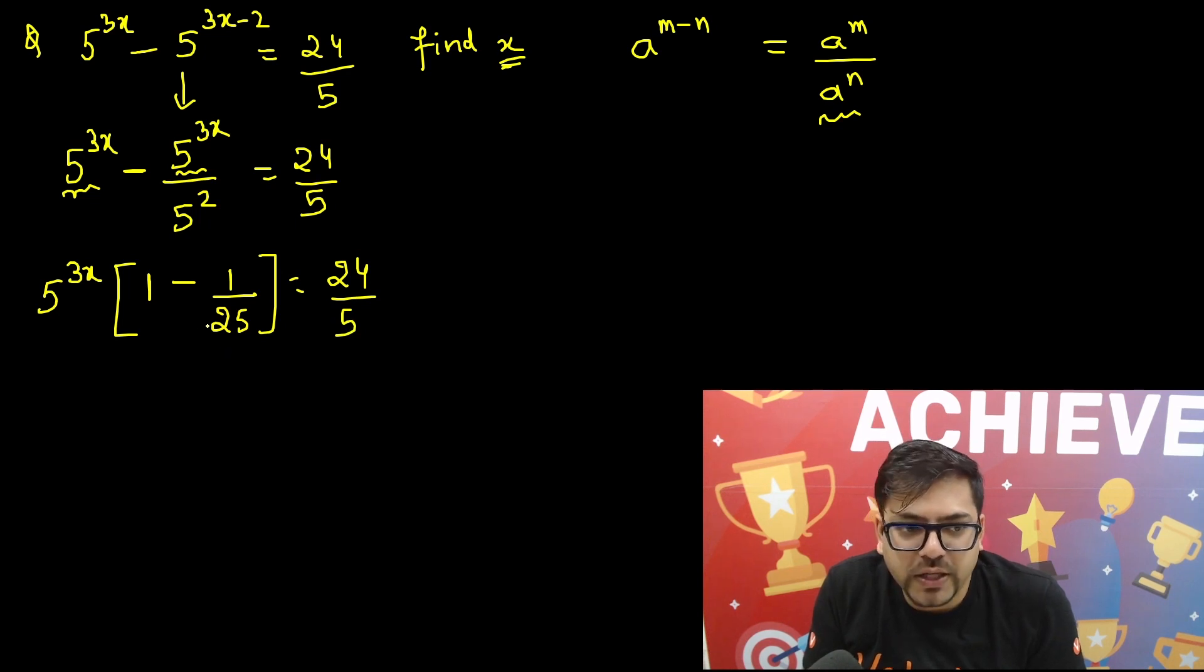Now if you solve it further, you can take the LCM, you can send this 25 to this side so it will become 25 minus 1, divided by 25, and in bracket here we have 5 raised to power 3x. That equals 24 by 5.